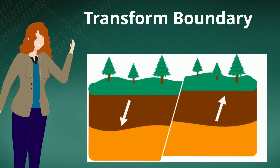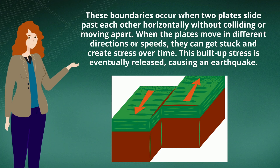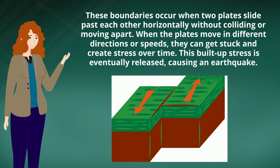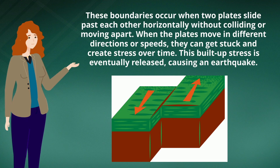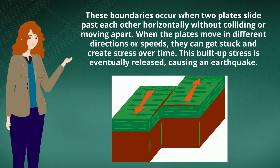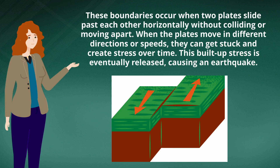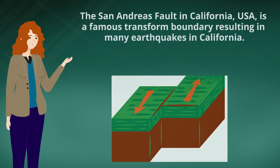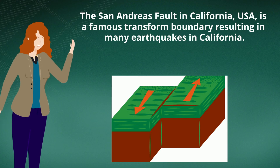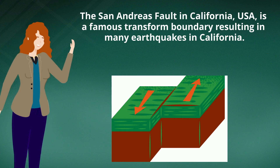Transform boundaries occur when two plates slide past each other horizontally without colliding or moving apart. When the plates move in different directions or speeds, they can get stuck and create stress over time. This built-up stress is eventually released, causing an earthquake. The San Andreas Fault in California, USA is a famous transform boundary resulting in many earthquakes in California.